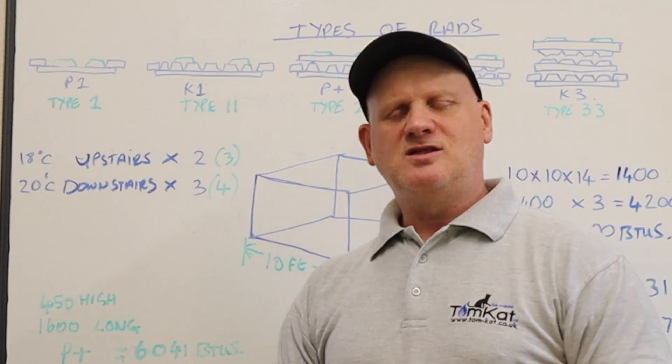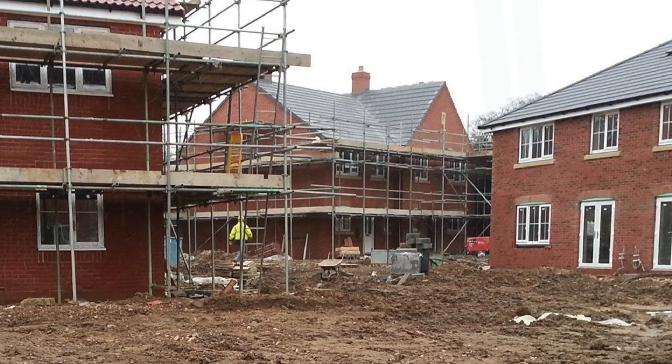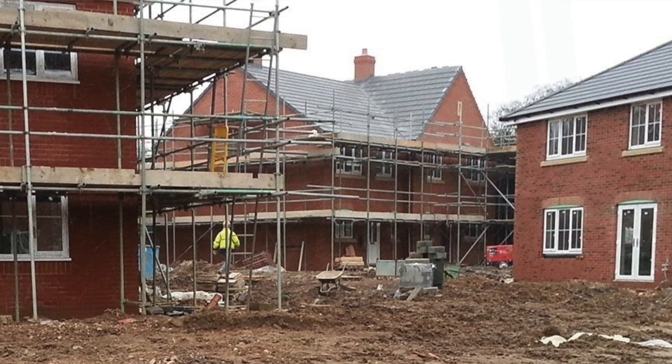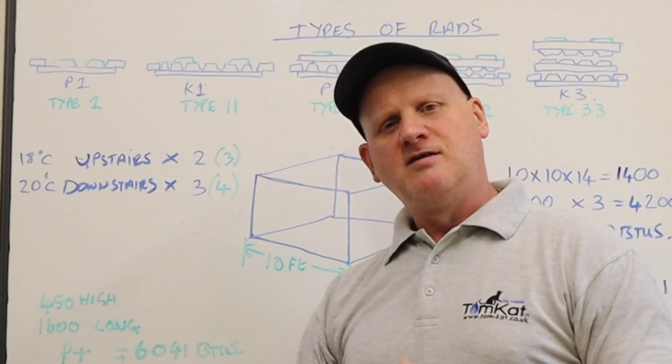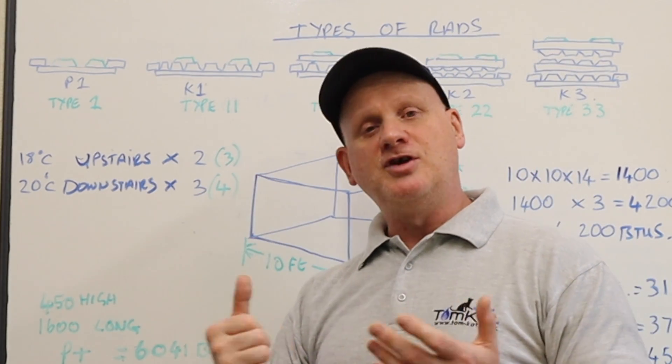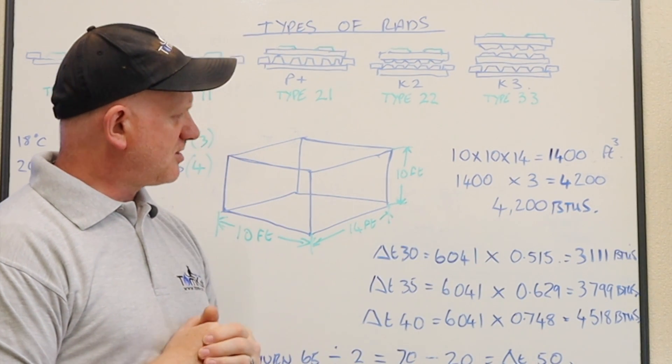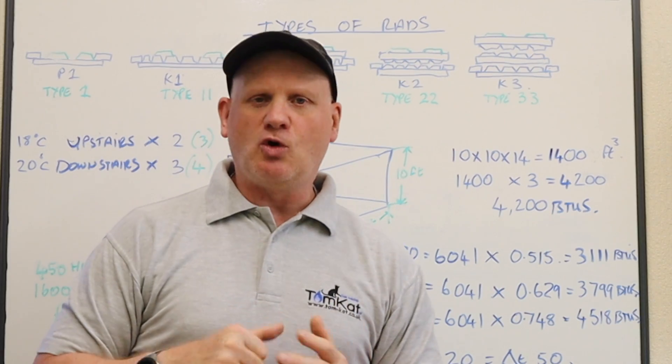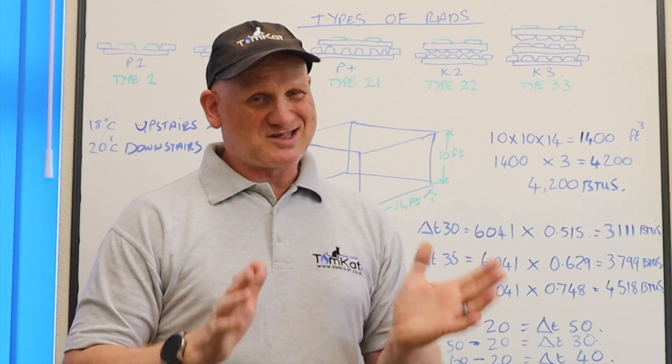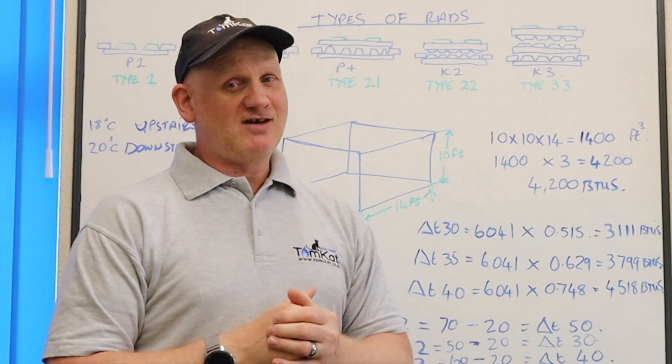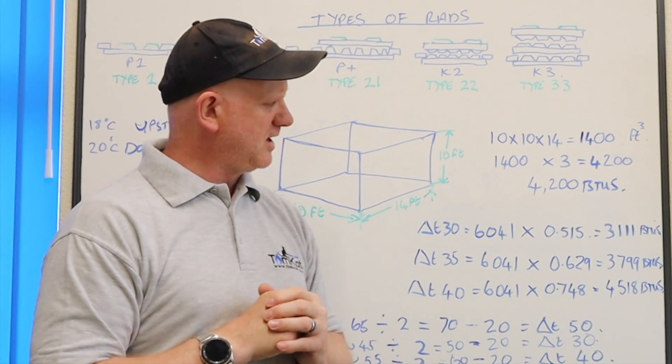Now where does this three come from? We have a number to times things by. If we're working out a radiator for upstairs, we would times it by two if it's a well insulated room. And if it's not a well insulated room, we would times it by three. So you could say if it's a 1930s semi-detached house, I would times it by three. But if it's a house built after 2008, I would times it by two. Now the downstairs, I would times it by three for a well insulated room or four for a not well insulated room.